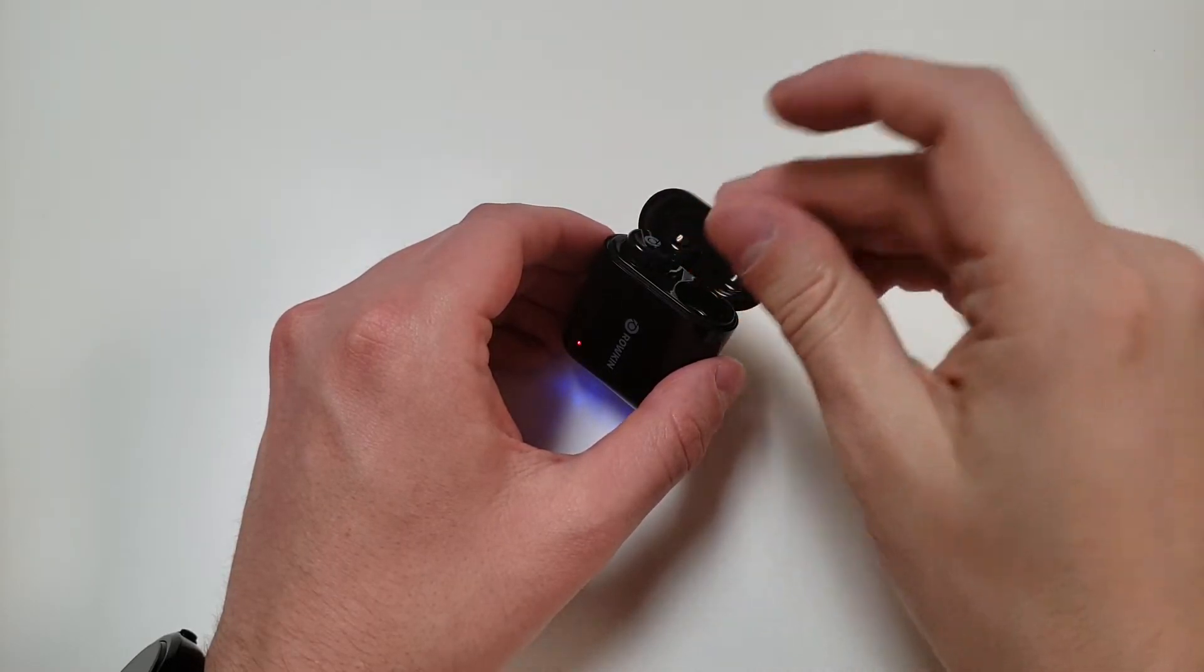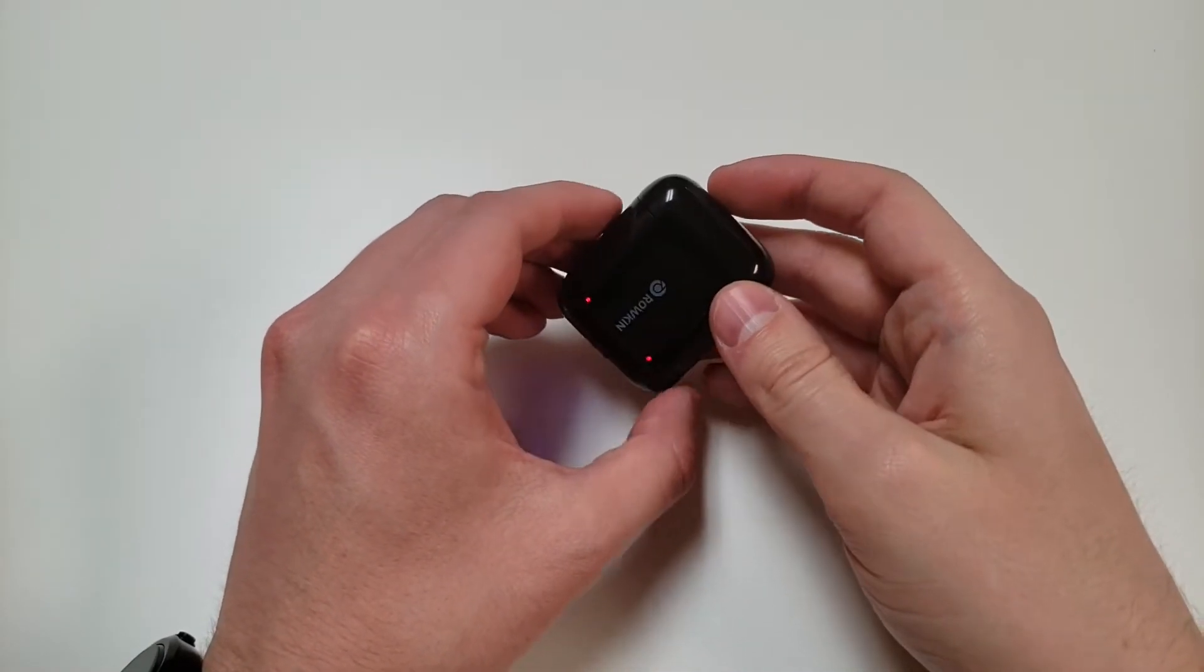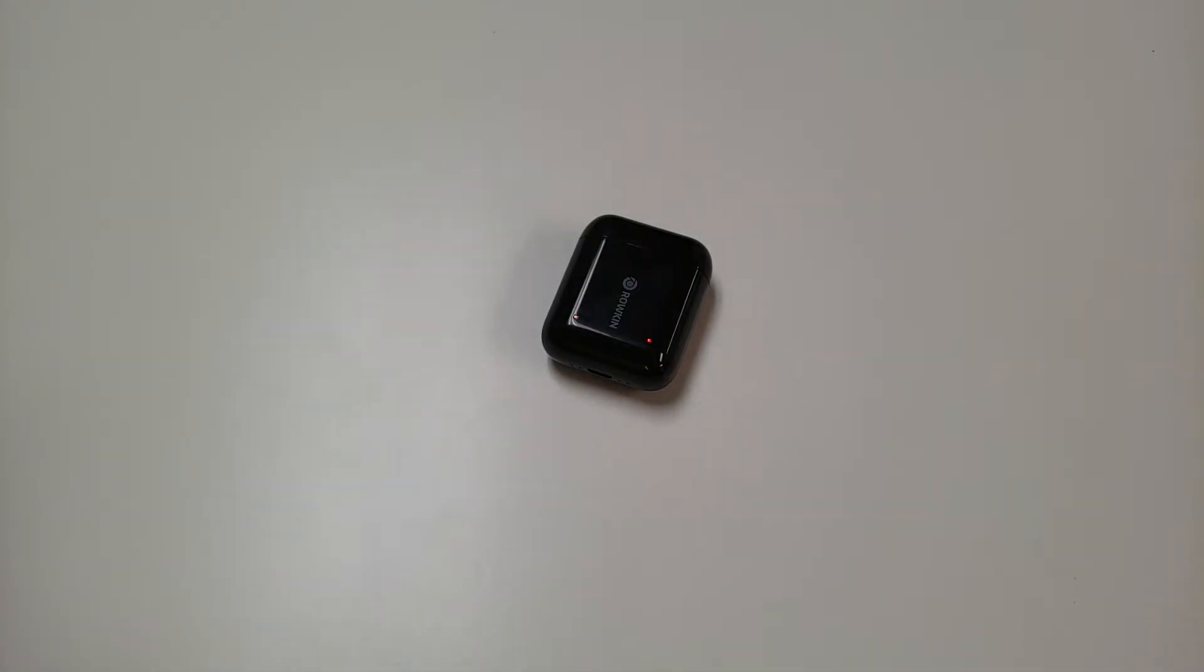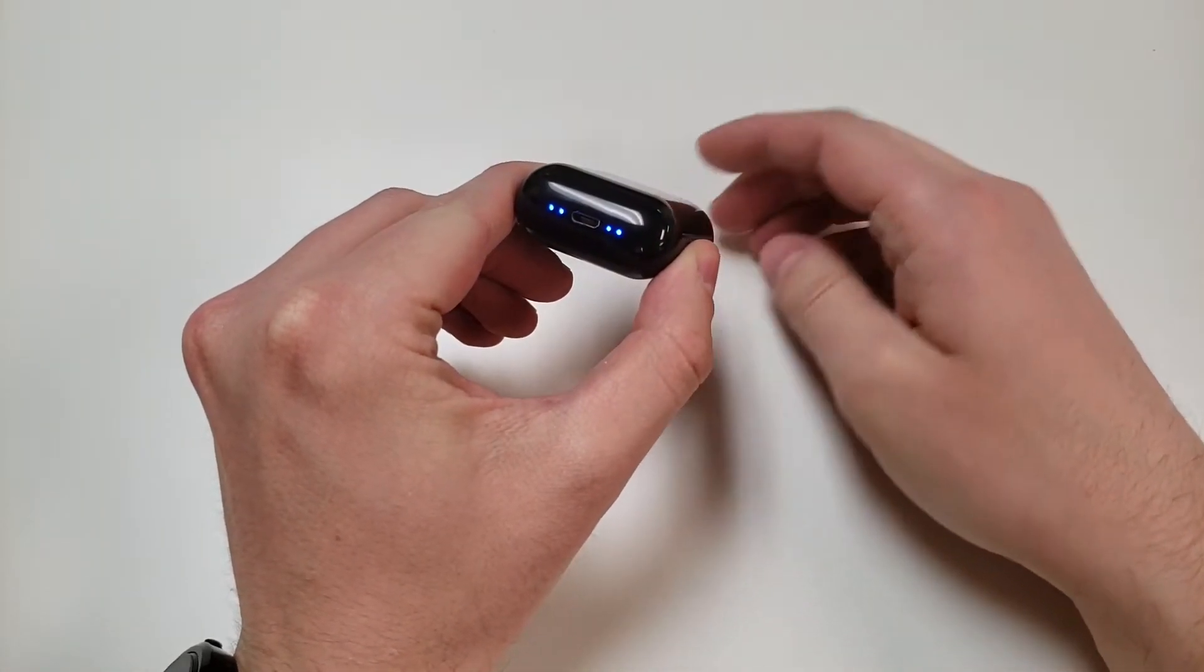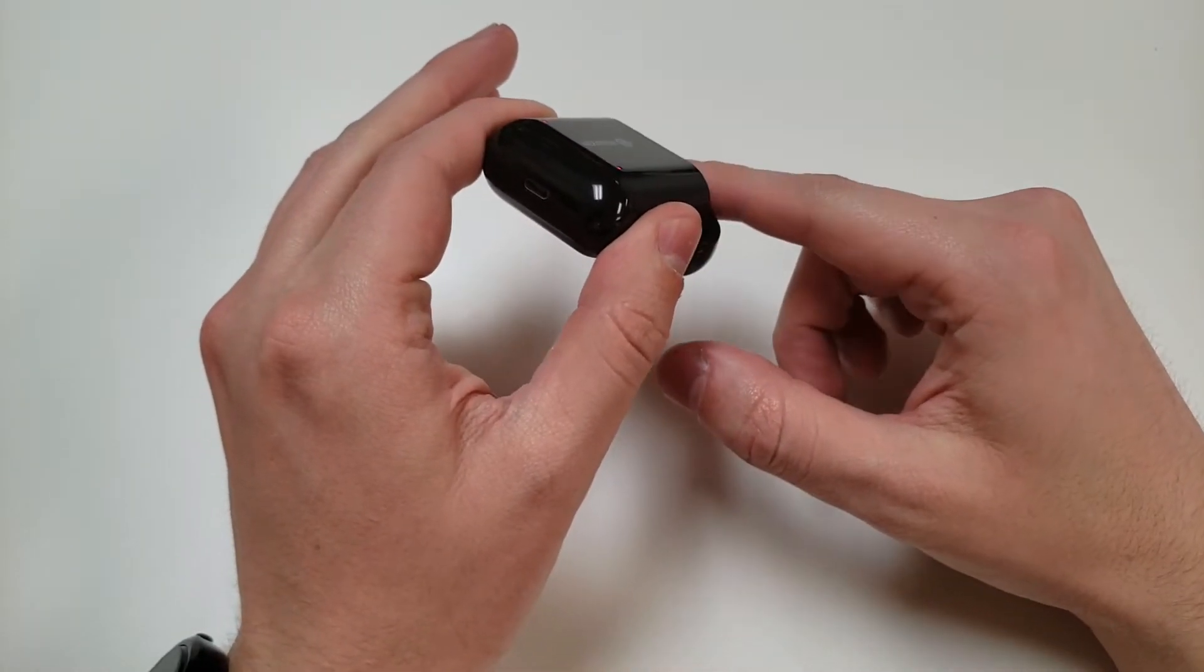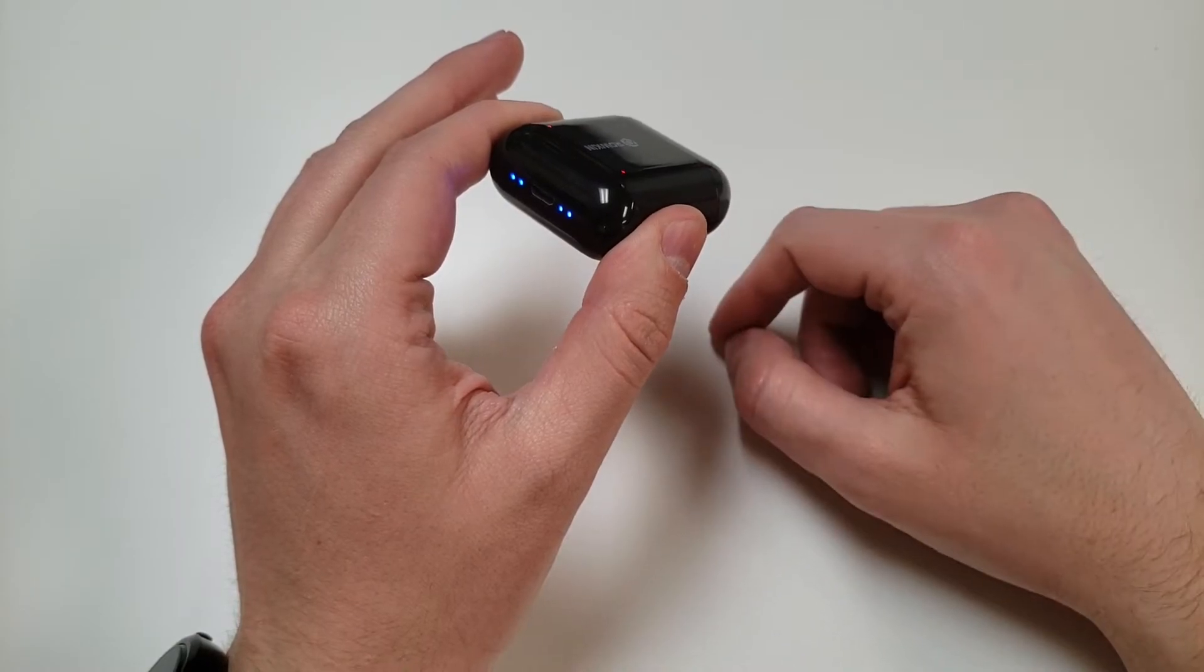The lights on the front are pretty cool because they tell you which buds are charging and which ones aren't. And when these red lights turn off, that means that the buds are charged. The case has four lights on the bottom to let you know how charged the case is. Simply open the case and it'll tell you how much of a charge is left. Which is pretty cool.